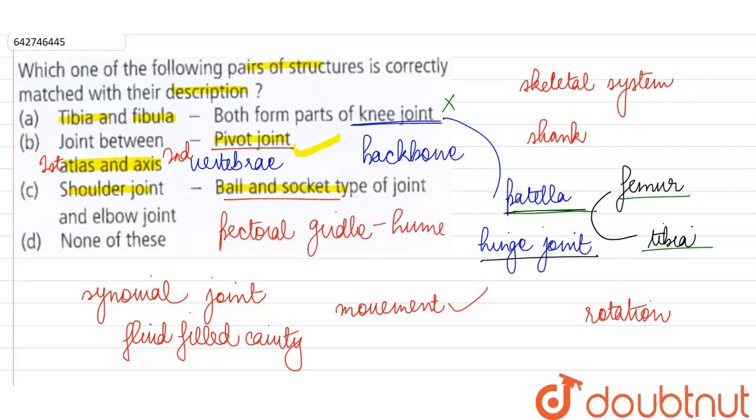With the help of a ball and socket type synovial joint. But here they are saying elbow joint. So elbow joint, just like the knee joint, is an example of hinge joint as we had already mentioned, and therefore this combination is again incorrect.